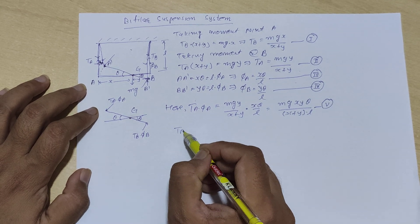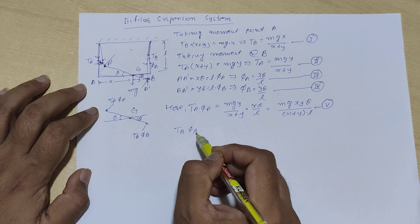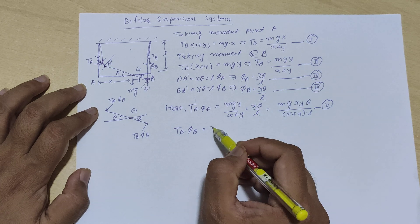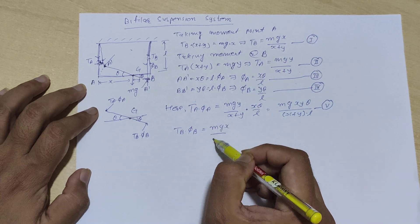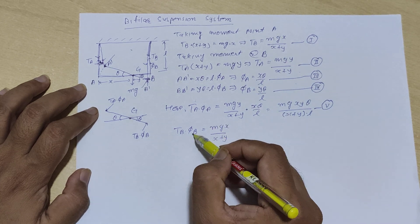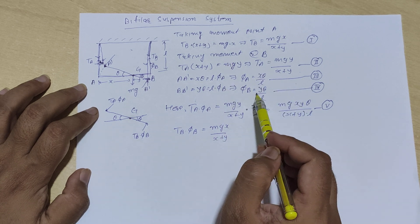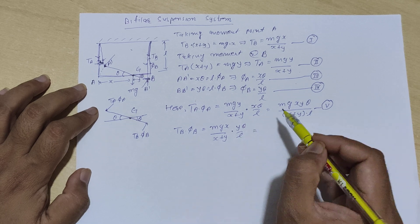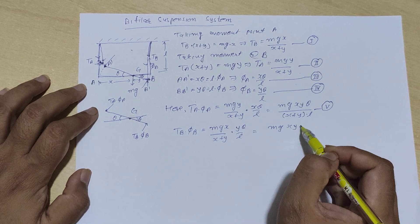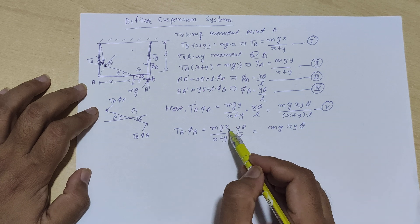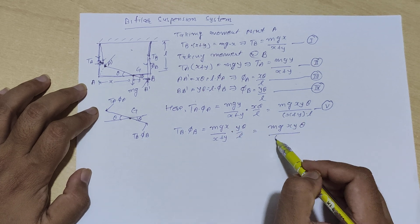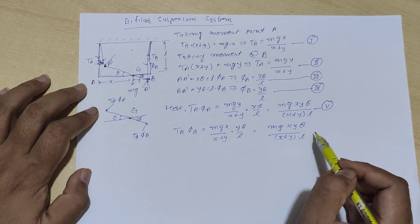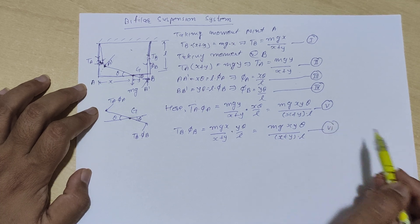Similarly, TB·phi_B: TB is from equation number 1, which is mg·x divided by (x+y), and phi_B is from equation number 4, which is y·theta divided by L. So TB·phi_B equals mg·x·y·theta divided by (x+y)·L. Let us say this is equation number 6.